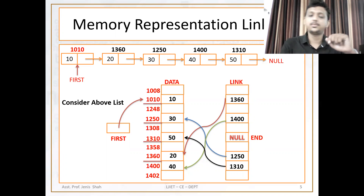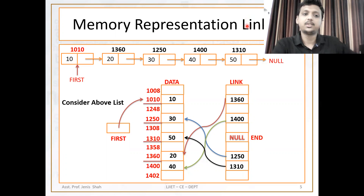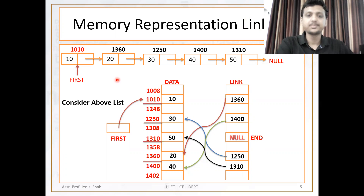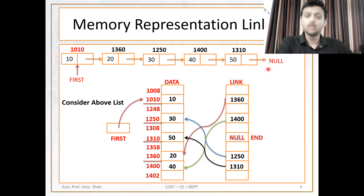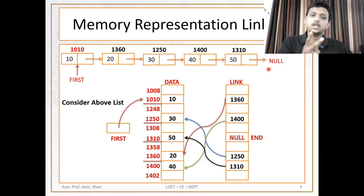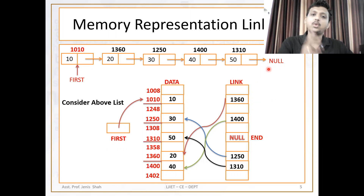This is the figure that we have last seen — the first is a pointer which points to the first node of the list. In a singly linked list, the last node points to null. The node of the linked list contains two different things: one is data, one is pointer. But here we usually use 'info' and 'link' for the algorithms.